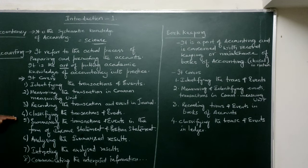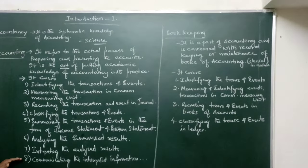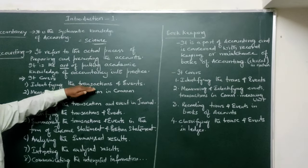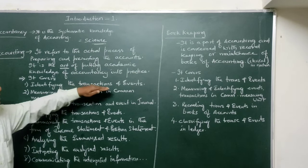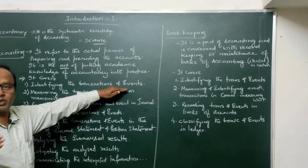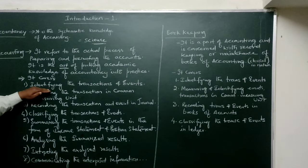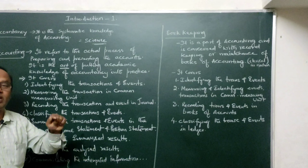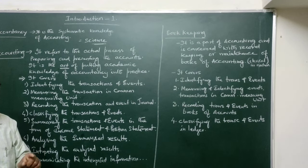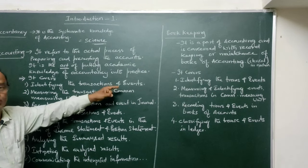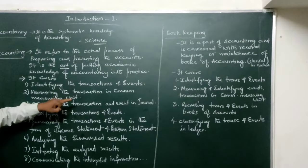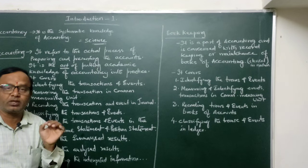Accounting covers several aspects. The first is identifying transactions and events. A transaction is an economic activity which takes place in a business. The accountant will first identify what particular economic transactions are relating to the business. The second aspect is measuring — measuring those transactions in a common measuring unit. In India, that common measuring unit is rupees.